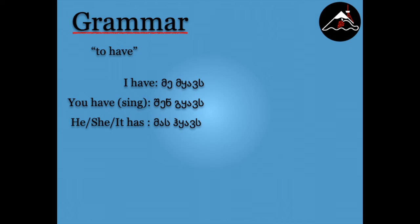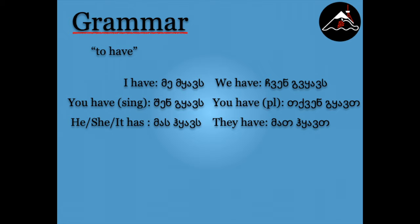He, she, or it has - Mas Gkavs. We have - Chven Gkavs. You have - Tkven Gkavs. They have - Mat Gkavs.